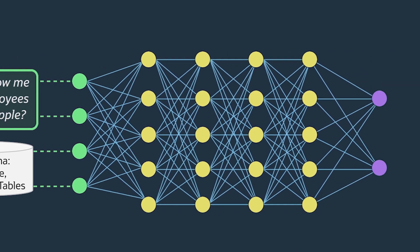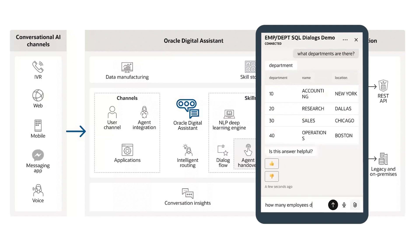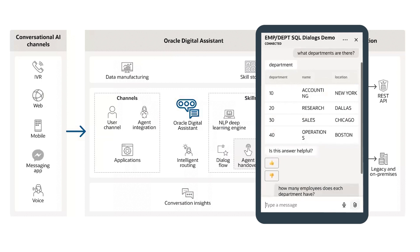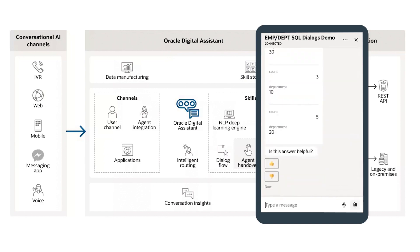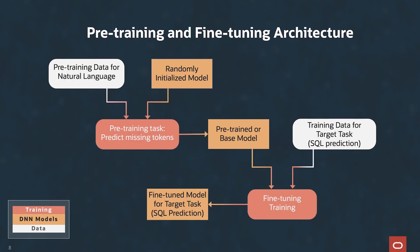This episode of First Principles is part two of our discussion on SQL Dialog. In part one, we covered the core AI technology behind Oracle Digital Assistant SQL Dialogs, which enables users to query databases through natural language queries. In part two, we're going to talk about details of the SQL Dialog-specific models, how we train them, as well as some of the techniques we use to avoid hallucinations.